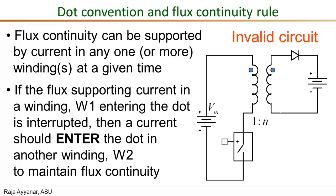To illustrate this further, consider this circuit schematic. When the switch is on, current enters the dot on the primary. When this current is interrupted by turning off the switch, we need a current that enters the dot on the secondary winding. However, the diode is placed in a direction that only supports current flowing left to right, and that current would only leave the dot. Therefore this circuit is not valid because it violates flux continuity — when the primary current is interrupted there is no way to maintain the flux continuous in the core.